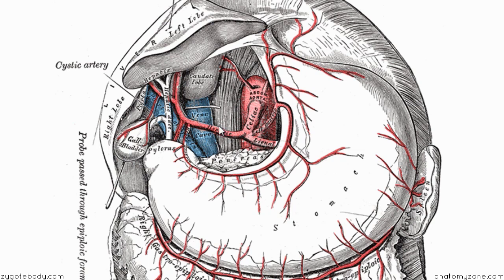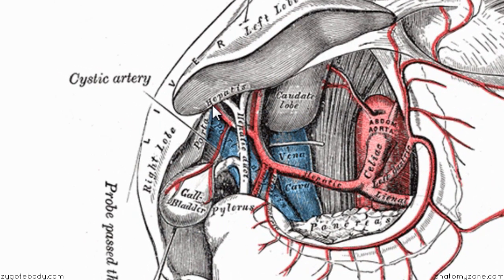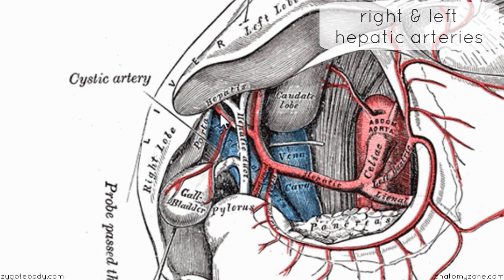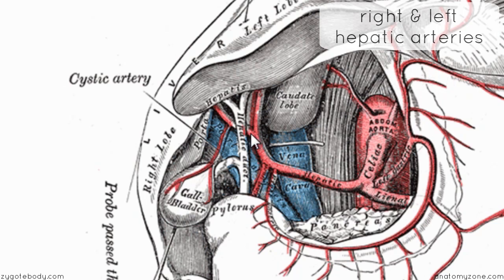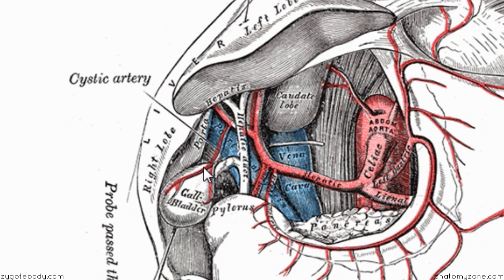The common hepatic splits into the proper hepatic and the gastroduodenal artery. Following the proper hepatic artery to the liver, you can see there are two clear divisions: the left hepatic artery and the right hepatic artery. This division occurs just before it enters the porta hepatis. You can also see this little vessel given off — it comes off the right hepatic artery and it's called the cystic artery, and it supplies the gallbladder.